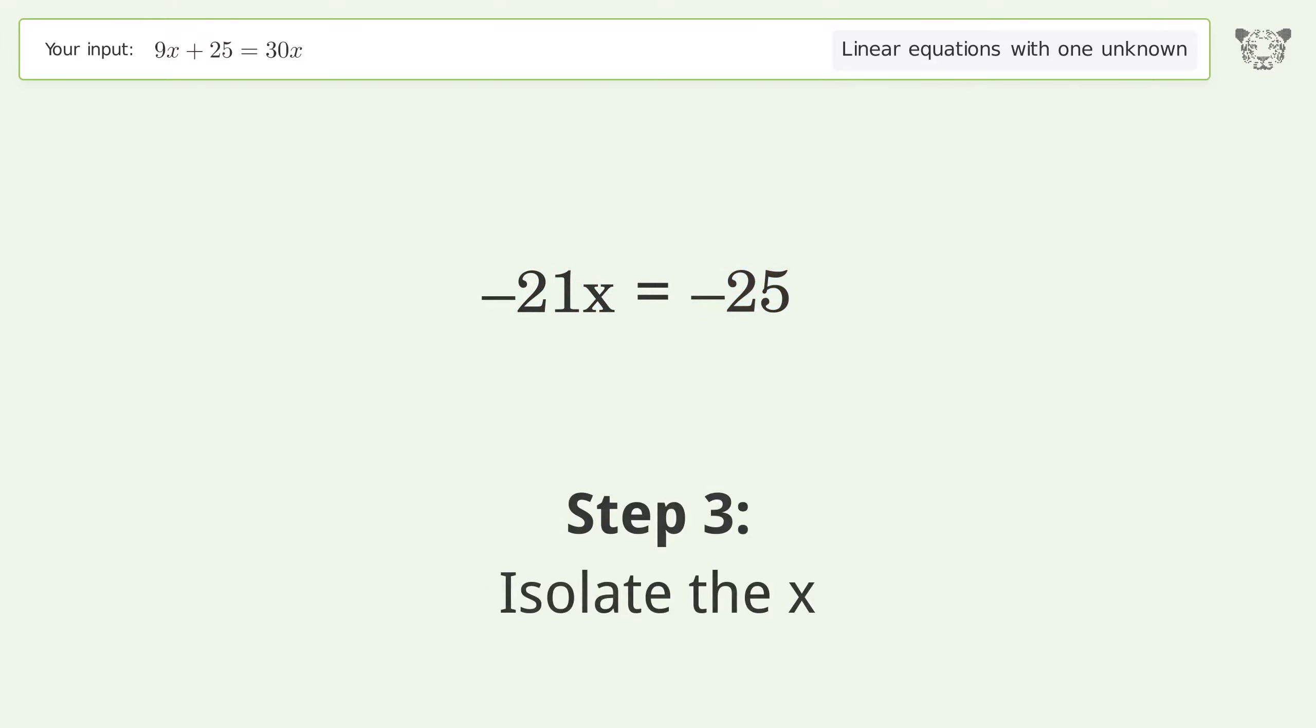Isolate the x. Divide both sides by negative 21. Cancel out the negatives.